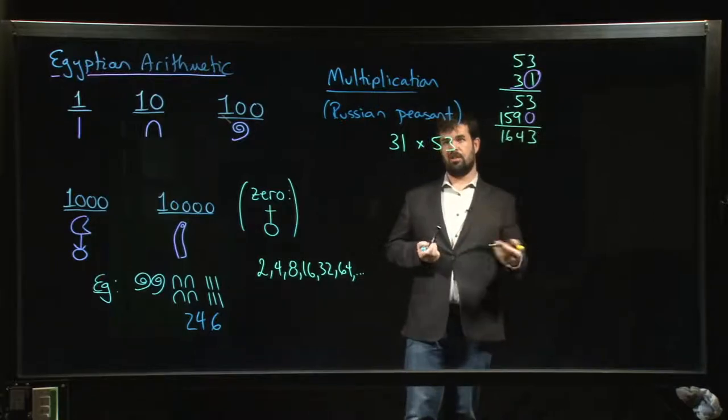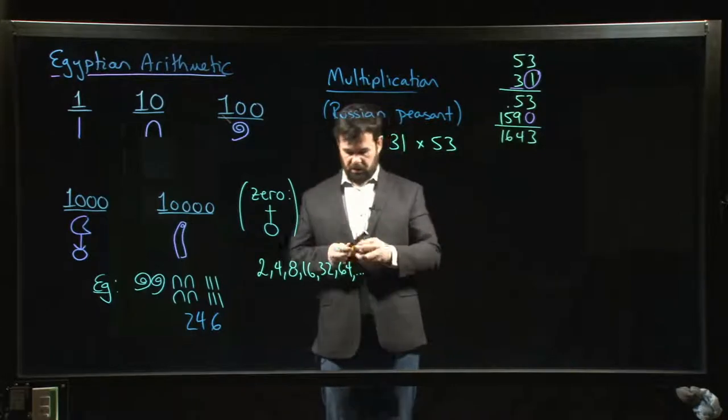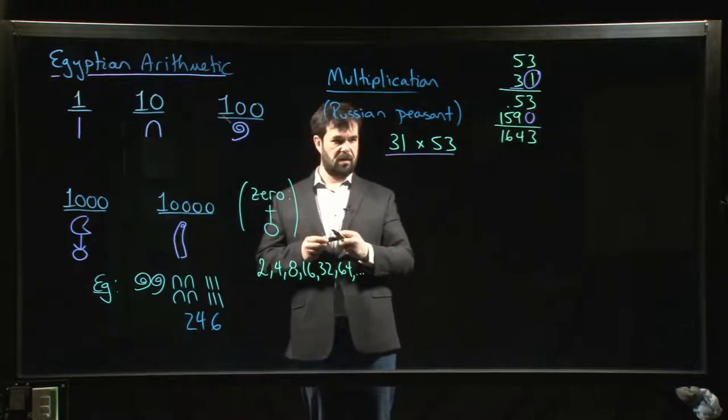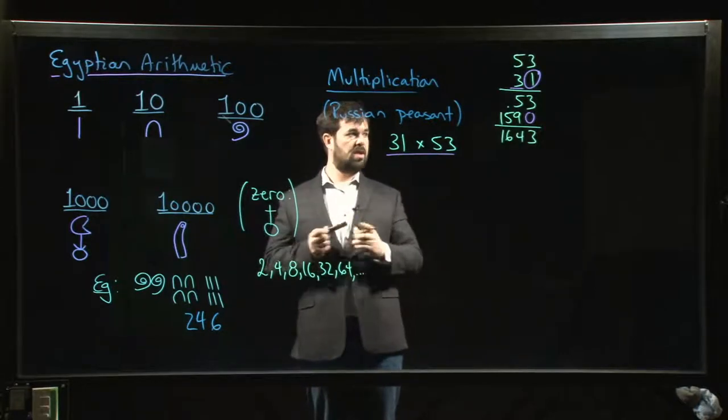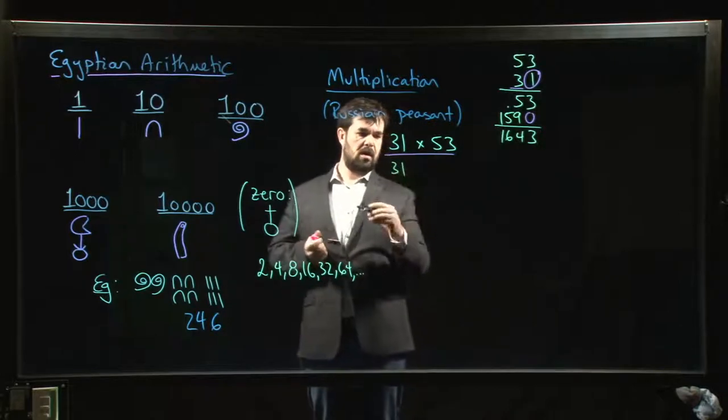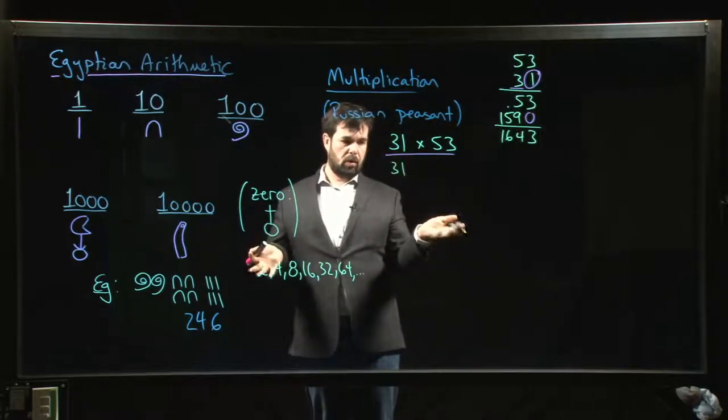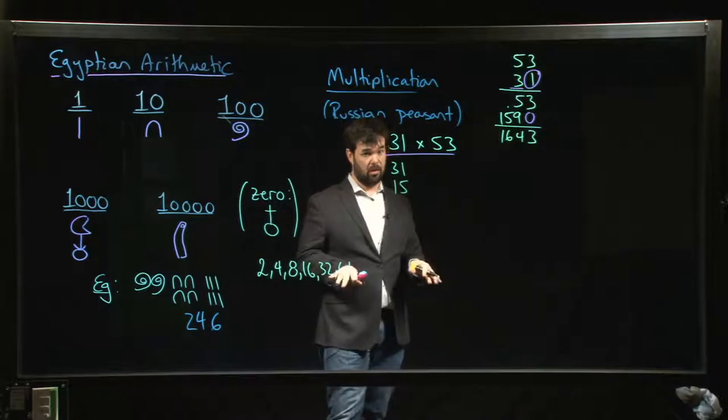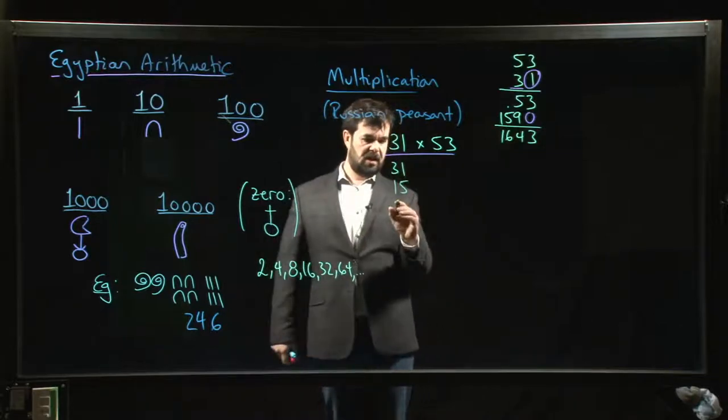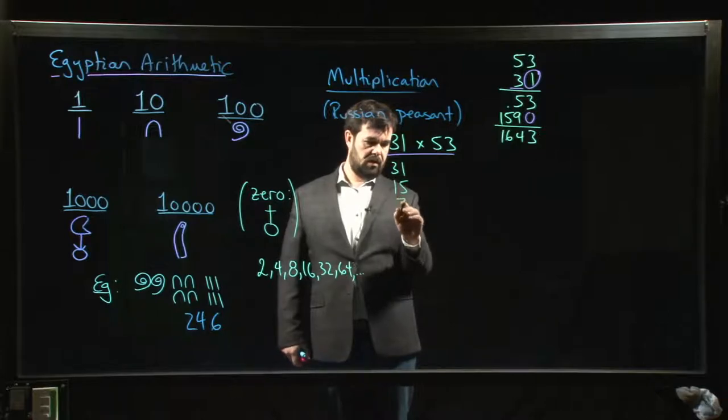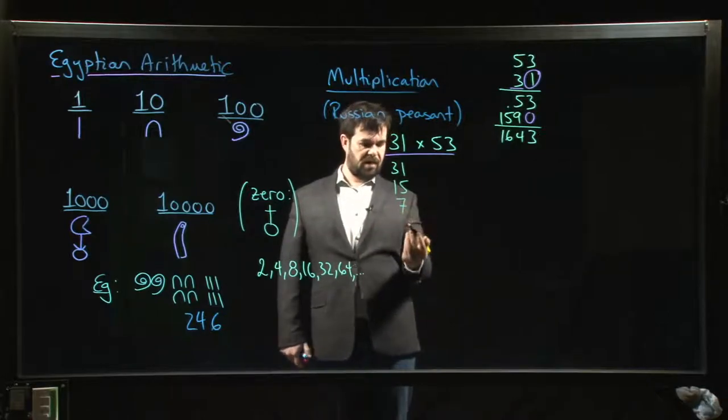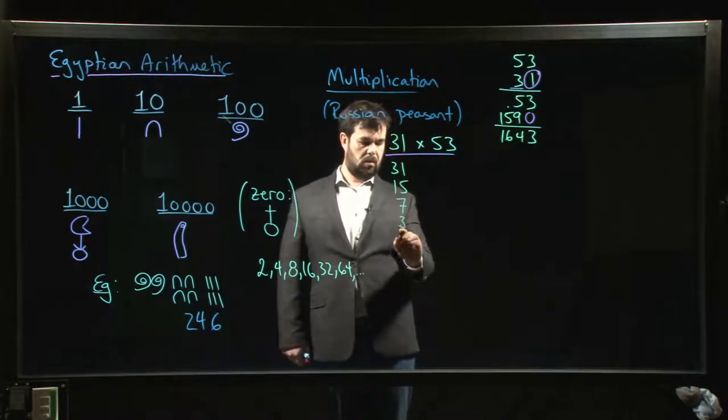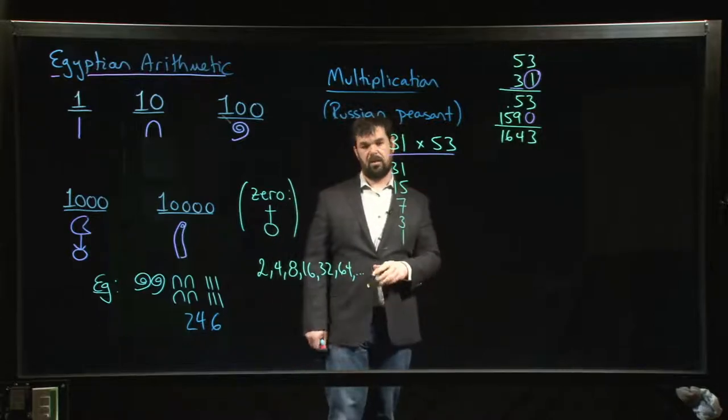Then you add them up. So that's 14, we carry the 1, so 1643. That's the number we should expect to get using this Egyptian method, this Russian peasant method. The way it works is you start by taking the number on the left and halving it. You keep dividing by half. If there's a remainder, you throw it away. So half of 31 is 15 with a remainder of 1, half of 15 is 7 with a remainder of 1, half of 7 is 3 with a remainder of 1, then 1.